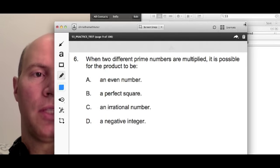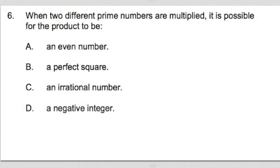I want to point out some interesting observations in this problem. When two different prime numbers are multiplied, it is possible for the product to be: a) an even number, b) a perfect square, c) an irrational number, d) a negative integer.